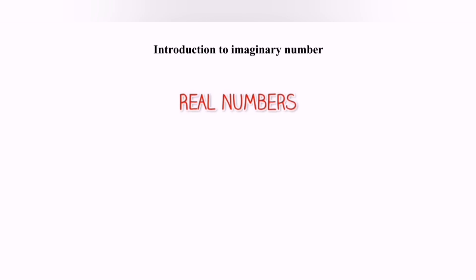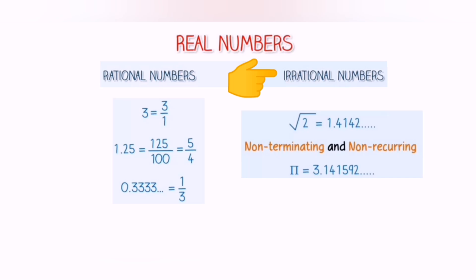We have already know what real numbers are. These are the numbers that can be represented on the number line. We also know that real numbers can be broadly classified as rational numbers and irrational numbers.